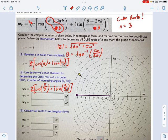And we can plot that on the graph by saying, here's pi over 3, and we're going to go out to 2. Okay? So there's w0.